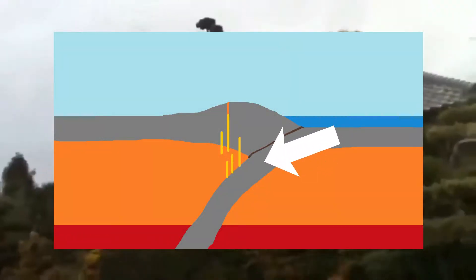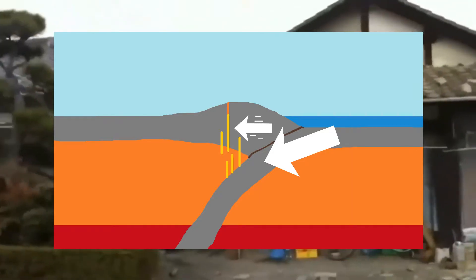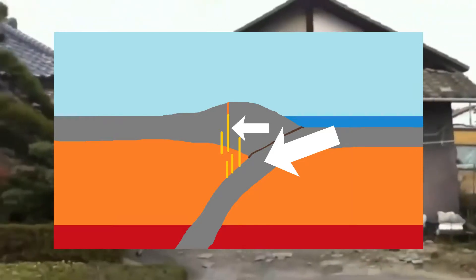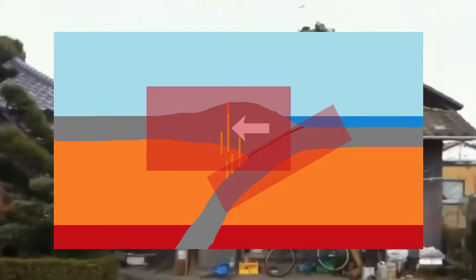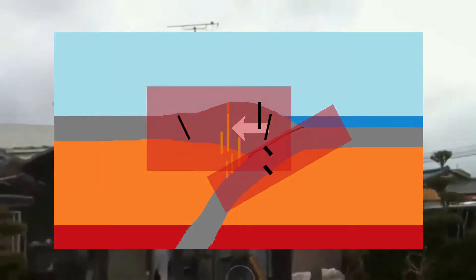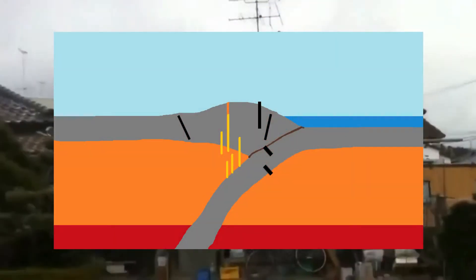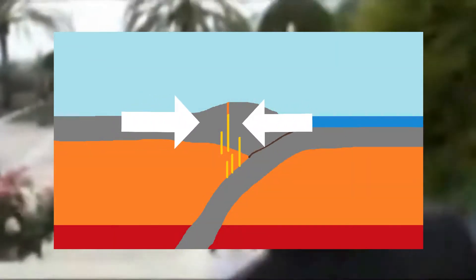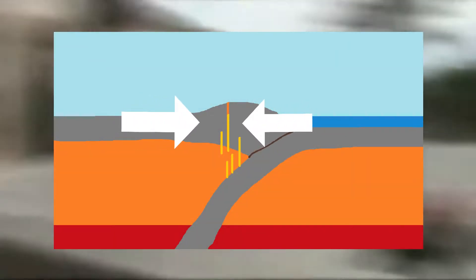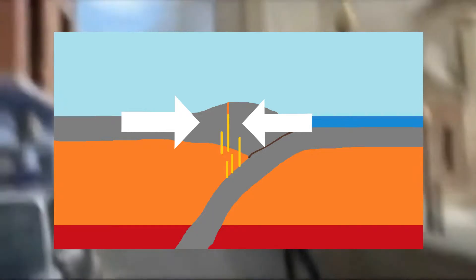The other thing that can happen is that smaller cracks form inside both the under- and overriding plate. It's obvious why cracks form in the overriding plate, as it is getting compressed for centuries or even a millennia. All that stress has to go somewhere.